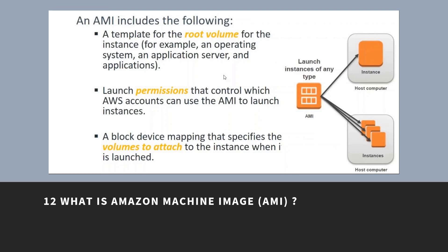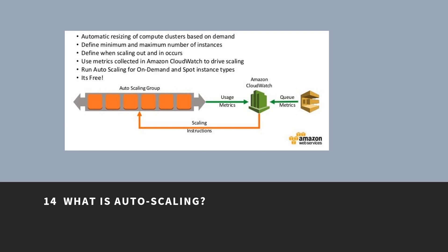What is auto scaling? Auto scaling helps you maintain application availability and allows you to automatically add or remove EC2 instances according to the conditions you define. It supports automatic resizing of compute clusters based on demand, lets you define minimum and maximum number of instances, and uses metrics collected in Amazon CloudWatch to drive scaling. Dynamic scaling responds to changing demand, while predictive scaling automatically schedules the right number of EC2 instances based on predicted demand.